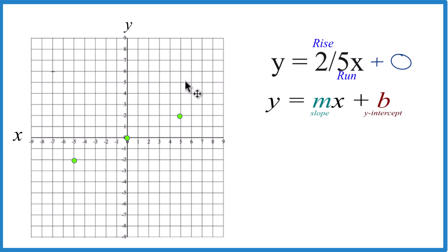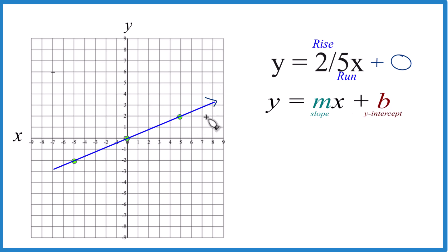And there's the graph for y equals two-fifths x. Put a line through that. Put arrows to show it goes to infinity. And that's our graph for y equals two-fifths x using slope-intercept form.